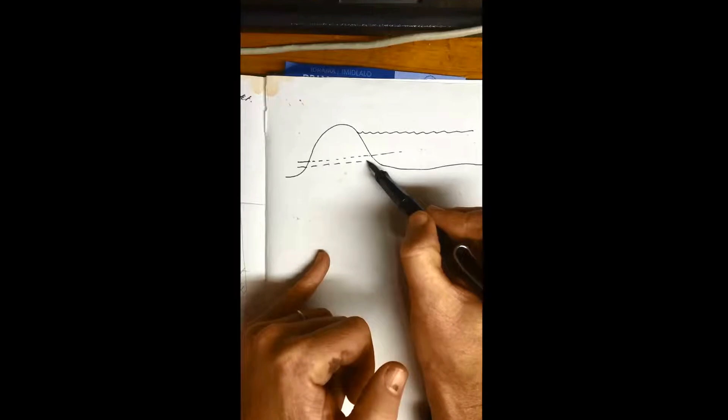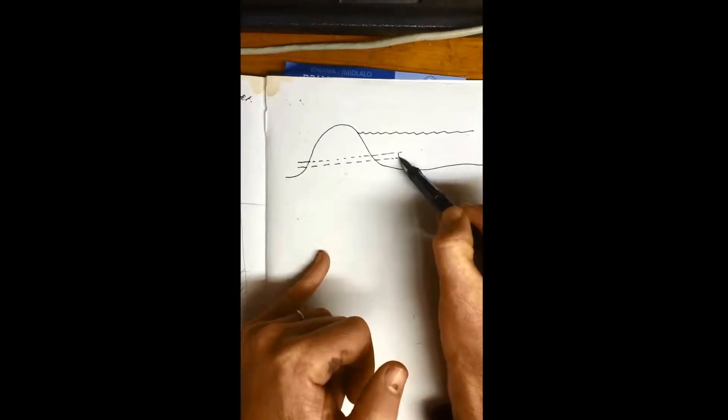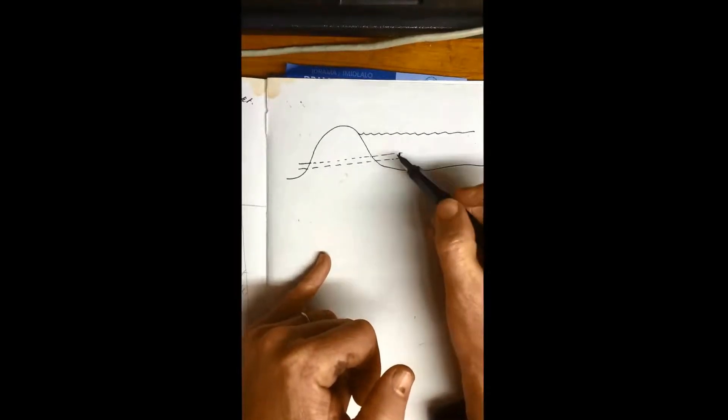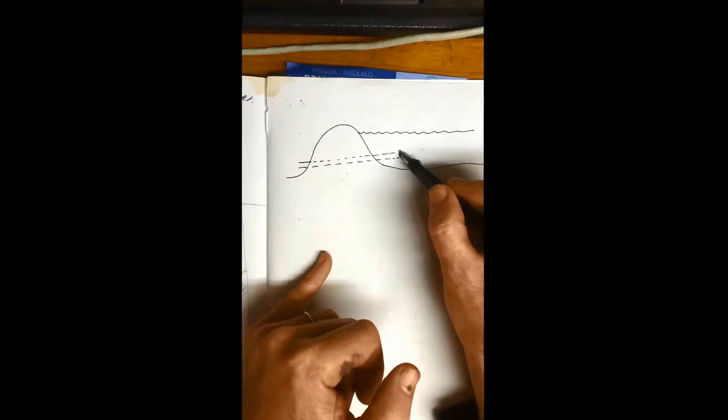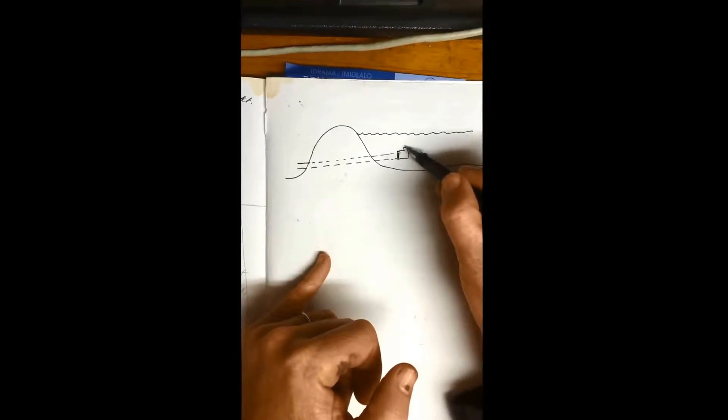And then at that point here, there's a cross section, there's an elbow, a 90 degree elbow. And then I've inserted a pipe to exactly that level there.